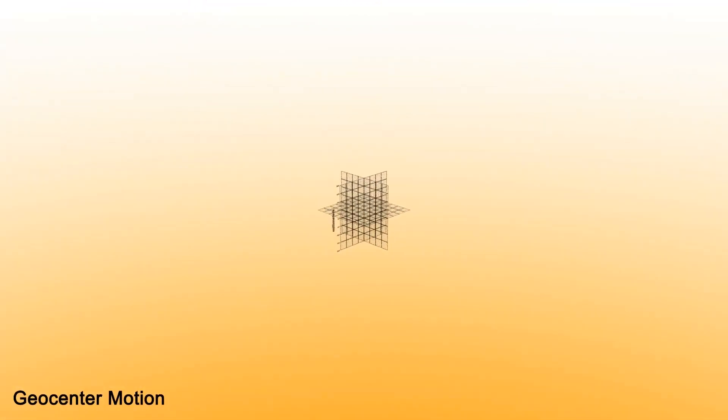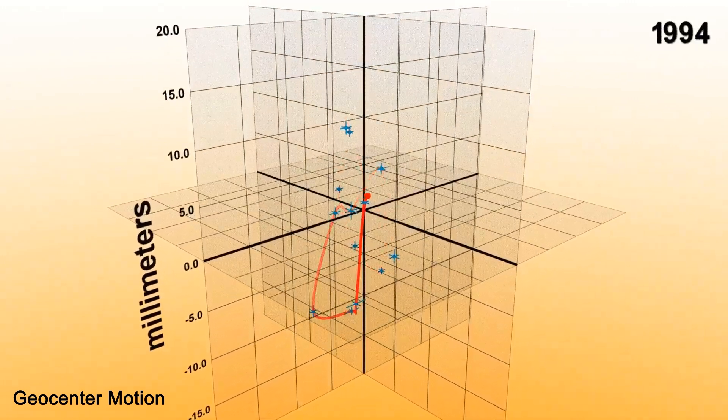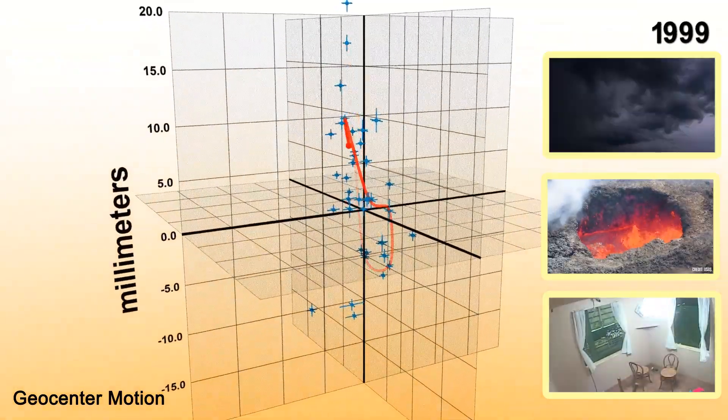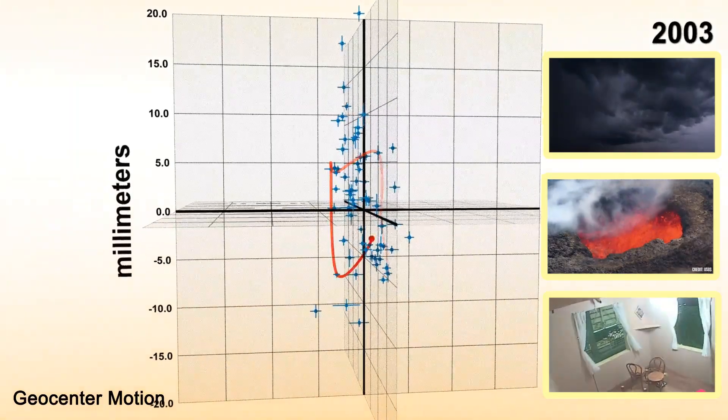One complication is that the center mass of the Earth is constantly changing over time with respect to the Earth's surface. Earthquakes, volcanoes, or even atmospheric pressure changes all impact where exactly the center mass of the Earth is.